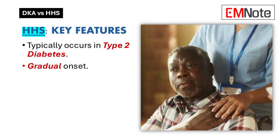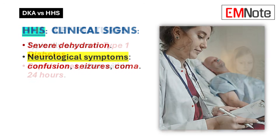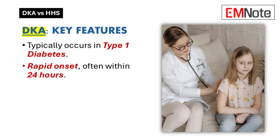Now let's contrast that with HHS, which is usually seen in type 2 diabetes. In HHS there is some insulin present, but the body's cells can't use it effectively due to insulin resistance. The result is sky-high blood sugar — we're talking 600 mg/dL or even higher. Despite that severe hyperglycemia, there's no significant ketosis, so pH and bicarbonate levels stay normal. The main issue in HHS is hyperosmolality — that high sugar concentration pulls water out of cells, leading to severe dehydration.